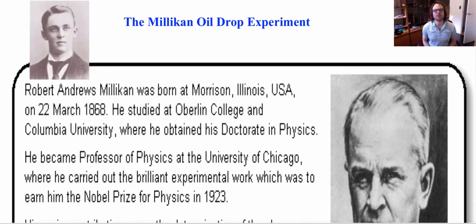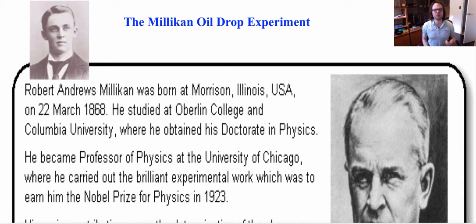In the last video, we looked at the history of the atom and then eventually into J.J. Thomson's experiments with cathode ray tubes that showed the charge-to-mass ratio between electrons. That was great, but we still did not know what was the mass of an electron or what was the charge. We only knew the ratio, and from that we had the Raisin-Bun model.